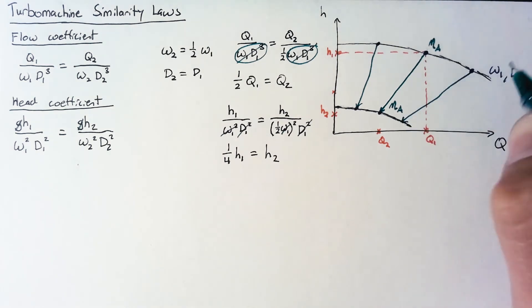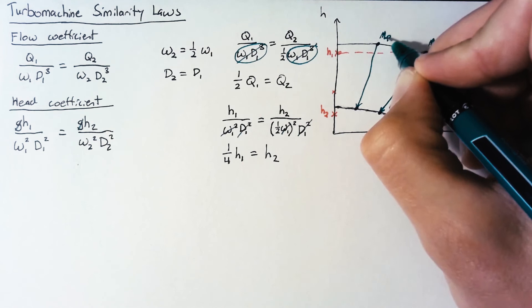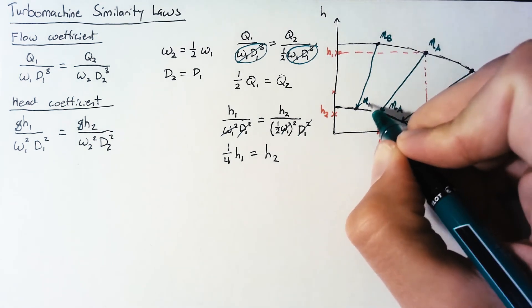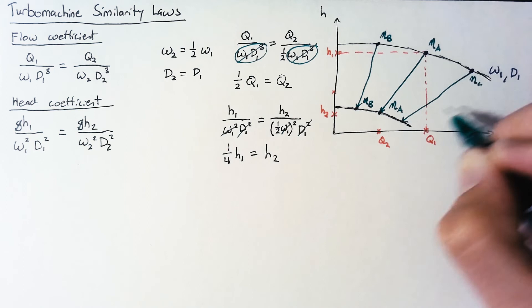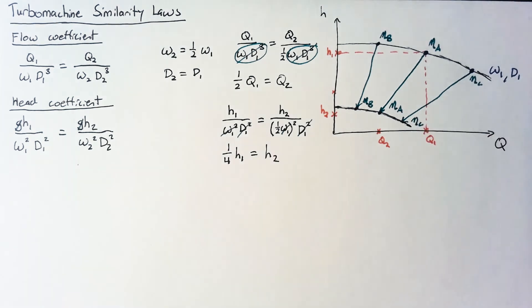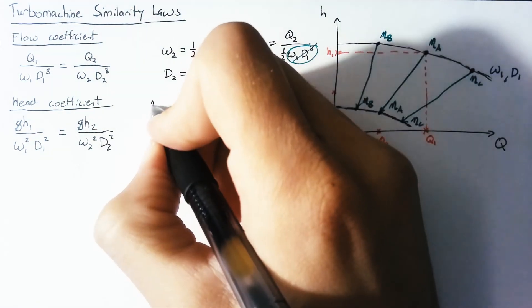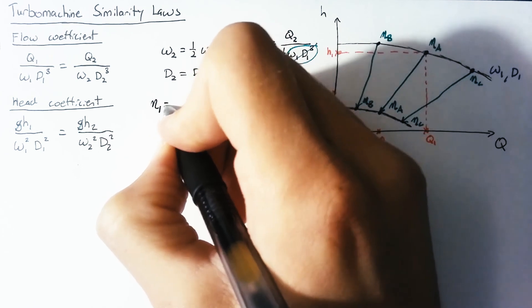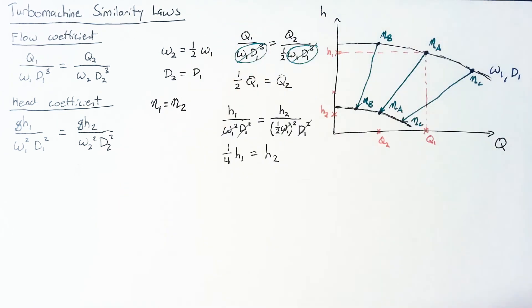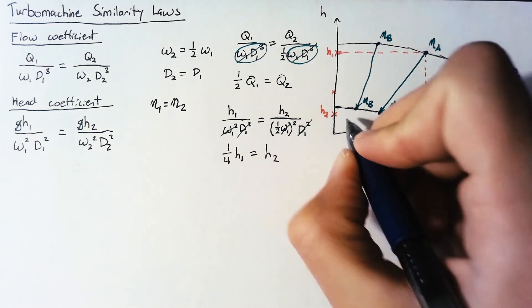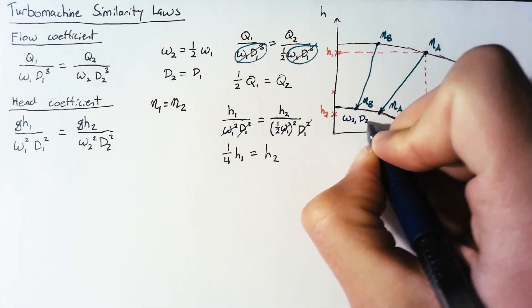Once again our efficiencies of each of these points, if this is some efficiency B it's still going to be efficiency B down at our lower curve. So our little unwritten rule here is that our eta 1 is going to be equal to eta 2 whenever we're doing this scaling. So this is our new pump that is operating at omega 2 and D2.